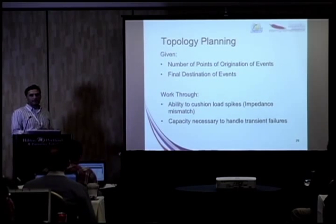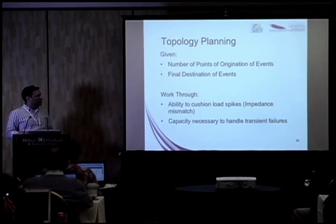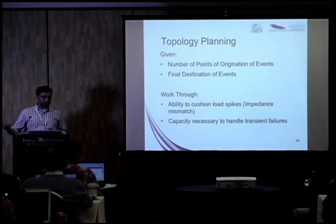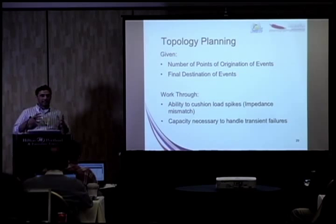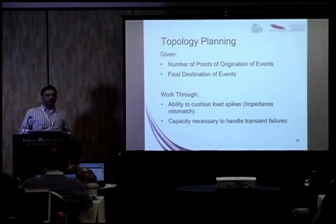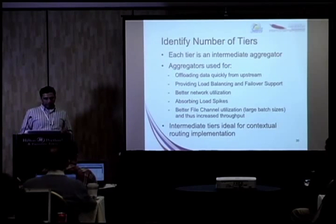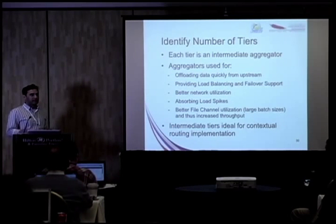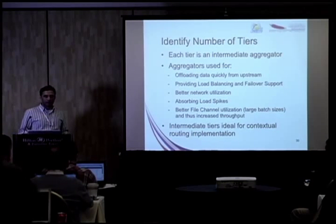Topology planning has these things to consider: the number of points of origination of events, like the number of data nodes or web servers; and where you actually want to send these events. Given those two factors, what you need to find out through your topology and deployment planning is how you can cushion the spikes of load that happen on your peripheral tiers and make sure you're not bringing down your production HDFS — for example, the 9am spike that happens because everybody opens their browsers. Also, what kind of maintenance downtimes do you need, and how can you plan for them so Flume continues to operate while your downstream systems are not available?